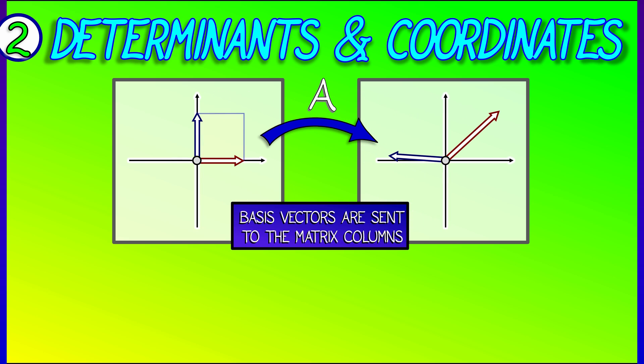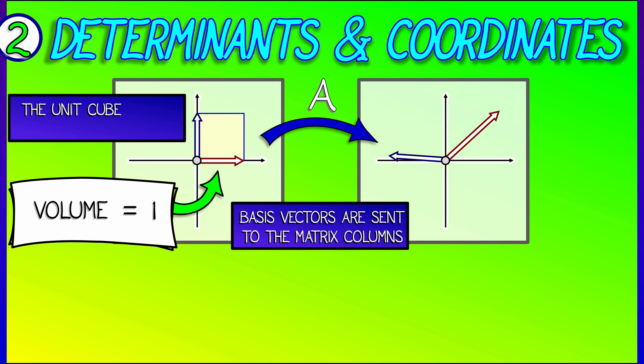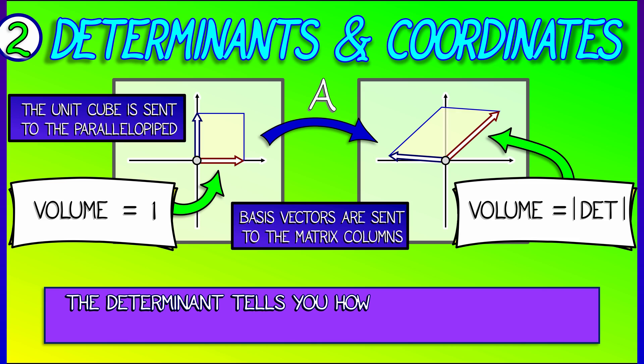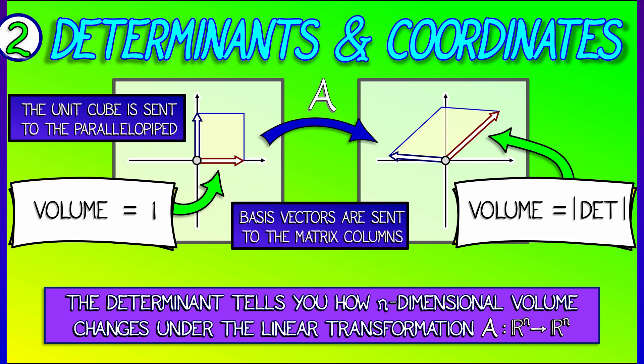those unit basis vectors are sent to the columns of A. Now those unit basis vectors span a unit cube in n-dimensional space. And that cube with volume one is sent to the parallelepiped whose volume is equal to the absolute value of the determinant of A.